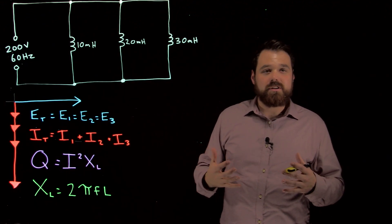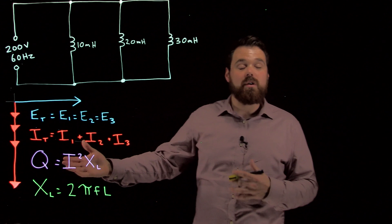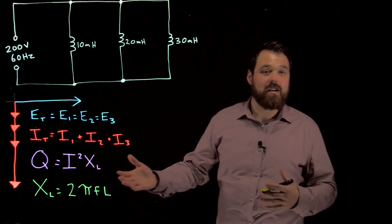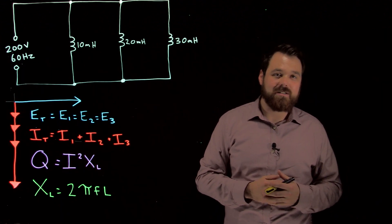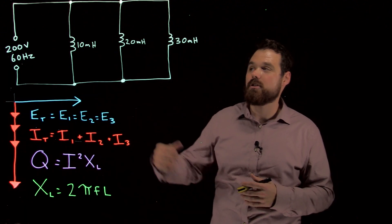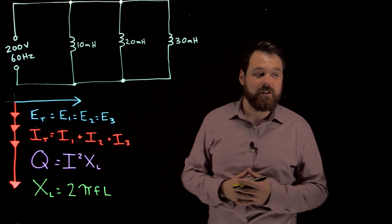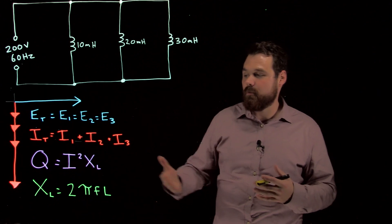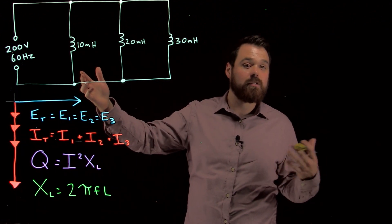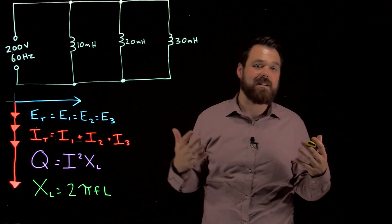We also still see our formula of Q, or the reactive power in our circuit, is still equal to I squared times the inductive reactance in that branch. If we're talking about inductor 1 specifically, the reactive power there would be the current flowing through that branch squared times the inductive reactance of that branch.